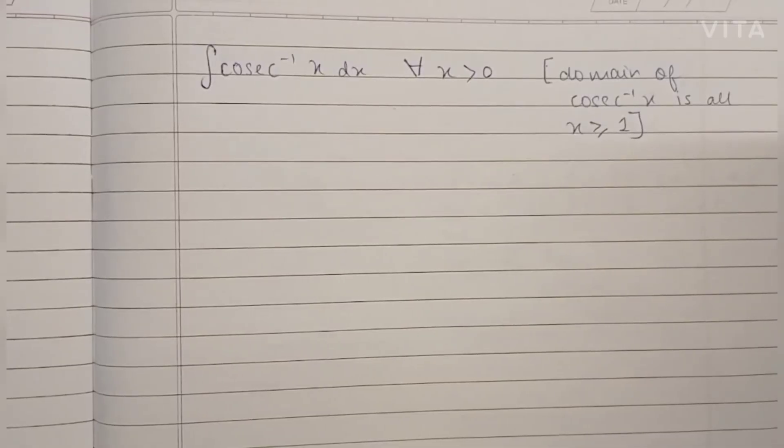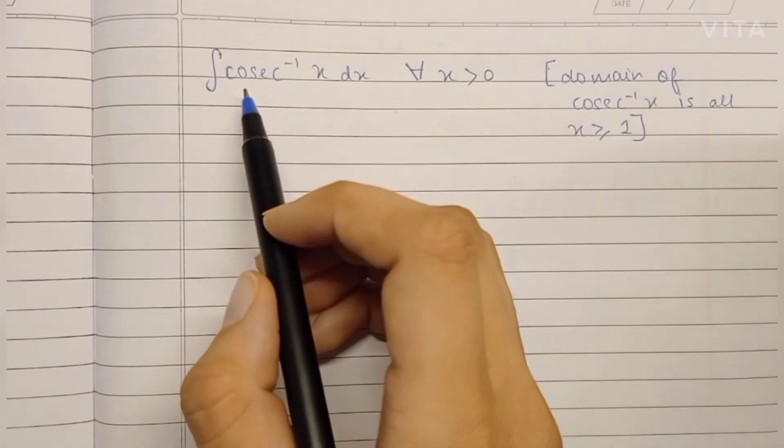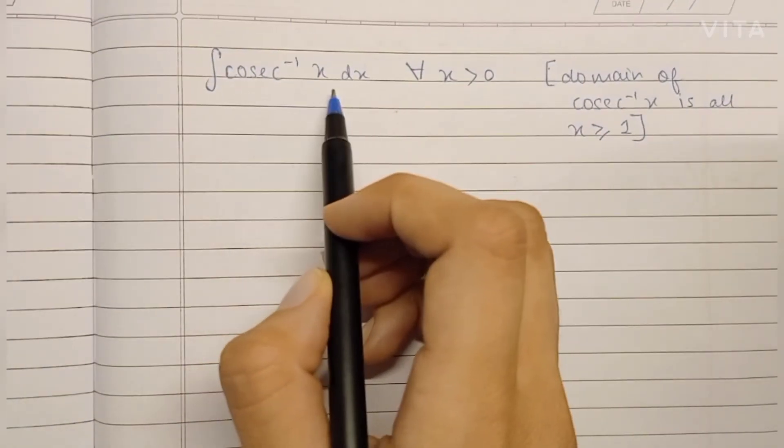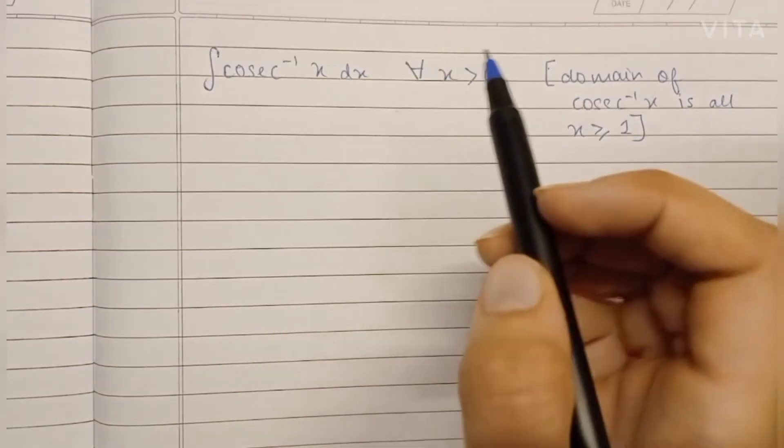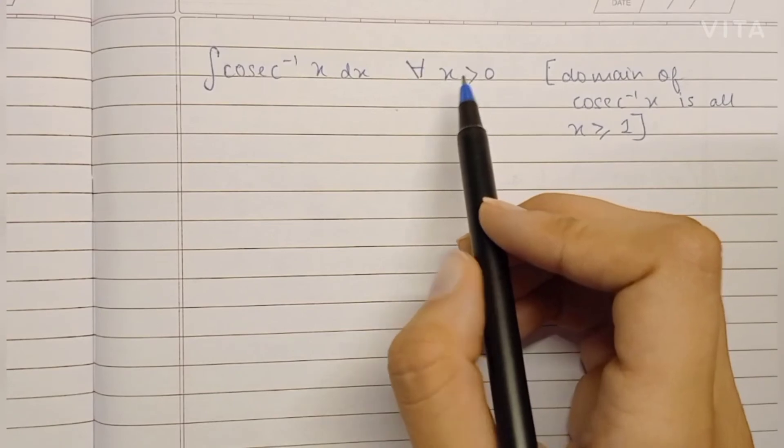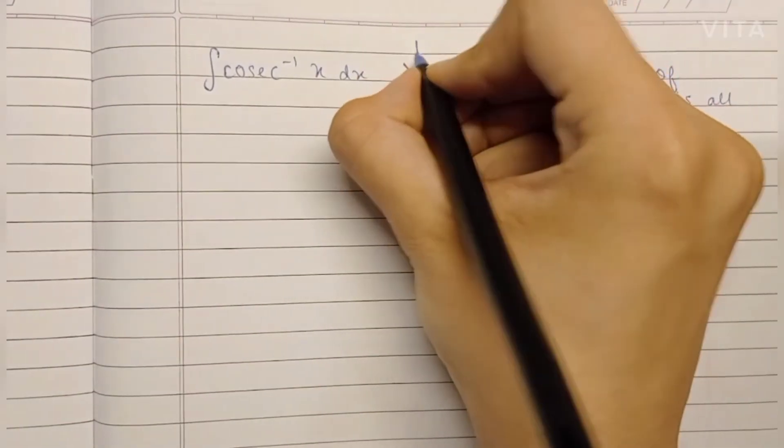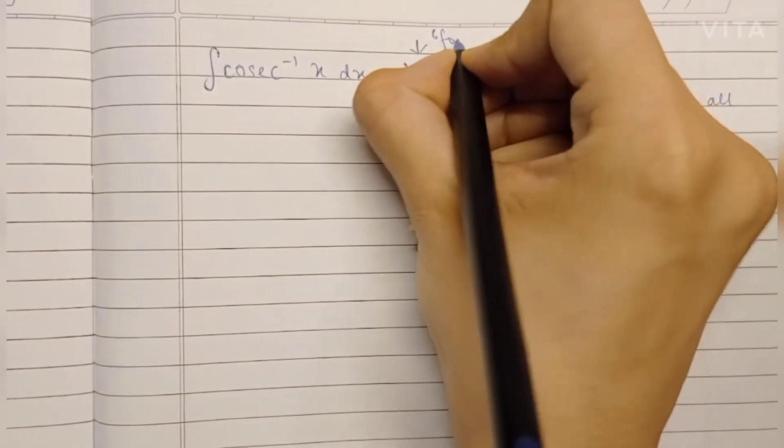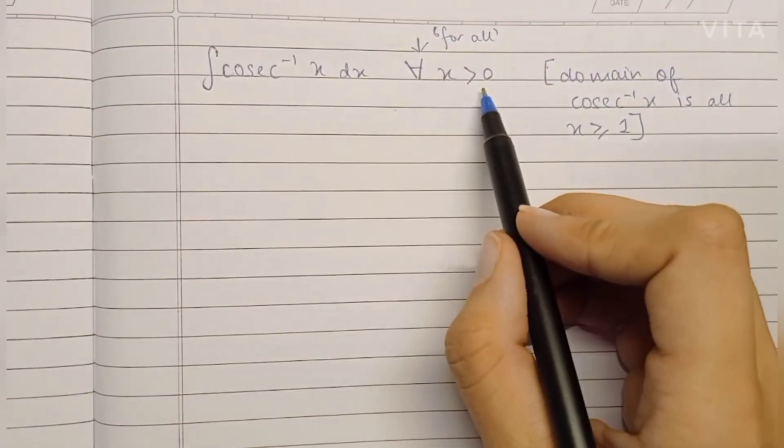Hey guys, welcome back to my channel. Today we'll be solving this question: the integral of cosec⁻¹(x) dx. It has been specified in the question that it's only for all x greater than 0. This upside-down A is the symbol for all, meaning 'for all,' so it's only for x greater than 0.